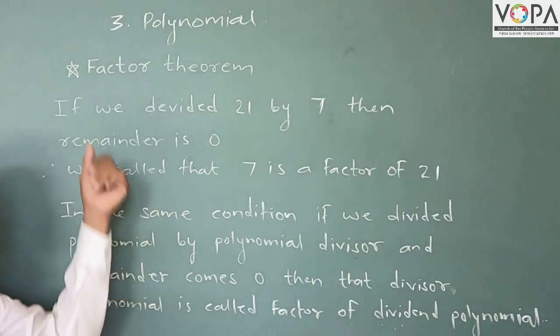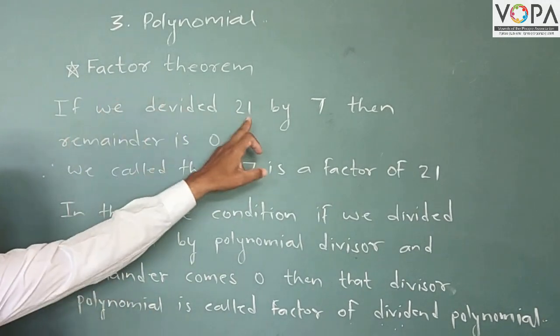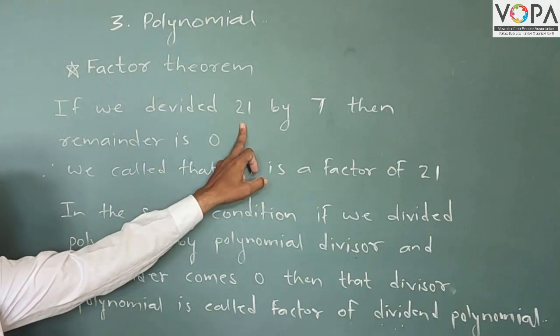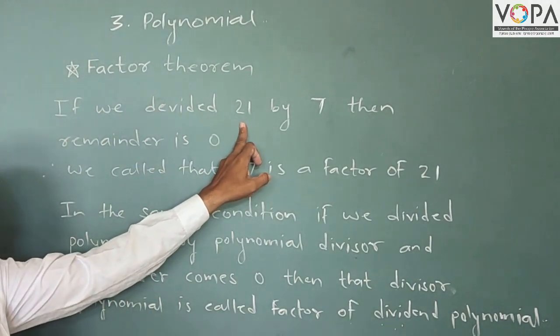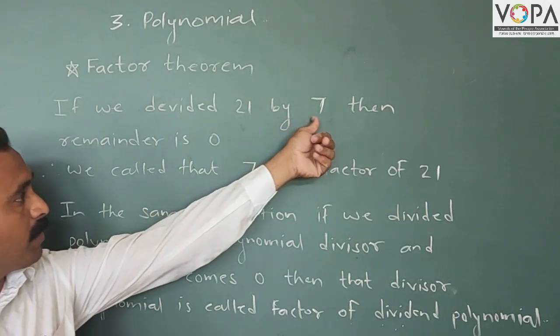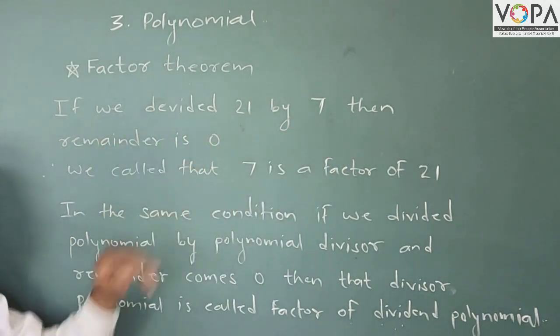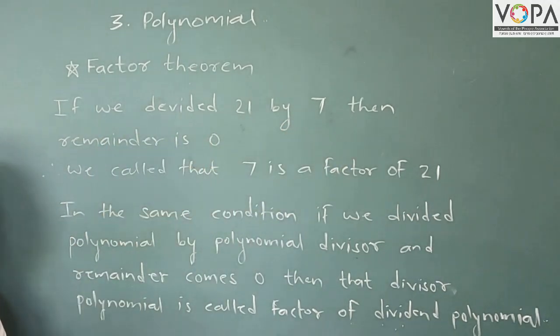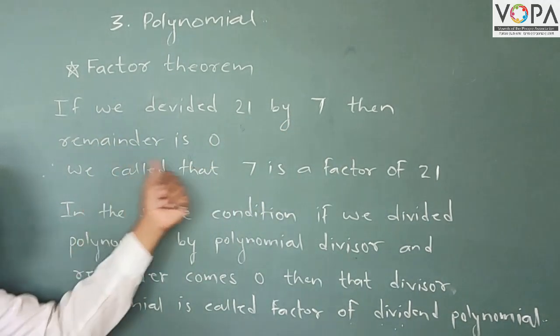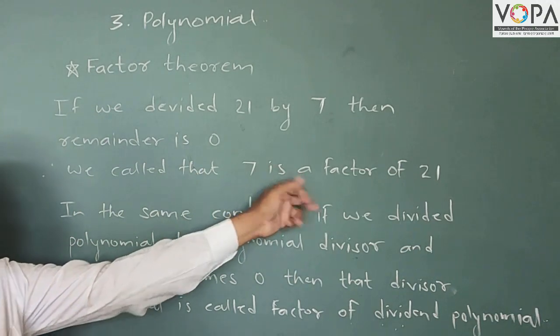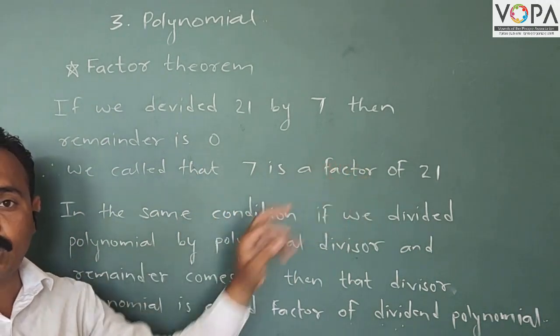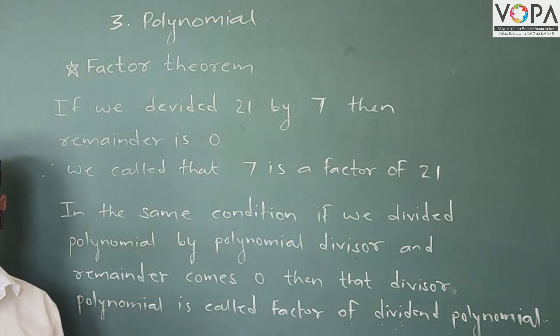Now, see here. If we divide 21 by 7 and the remainder is 0, then we call that 7 is a factor of 21.